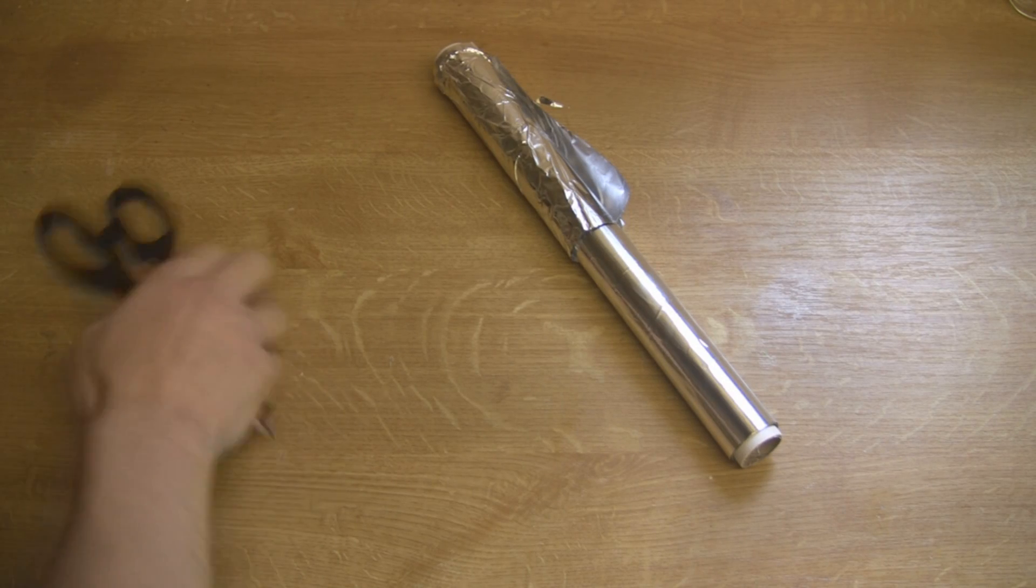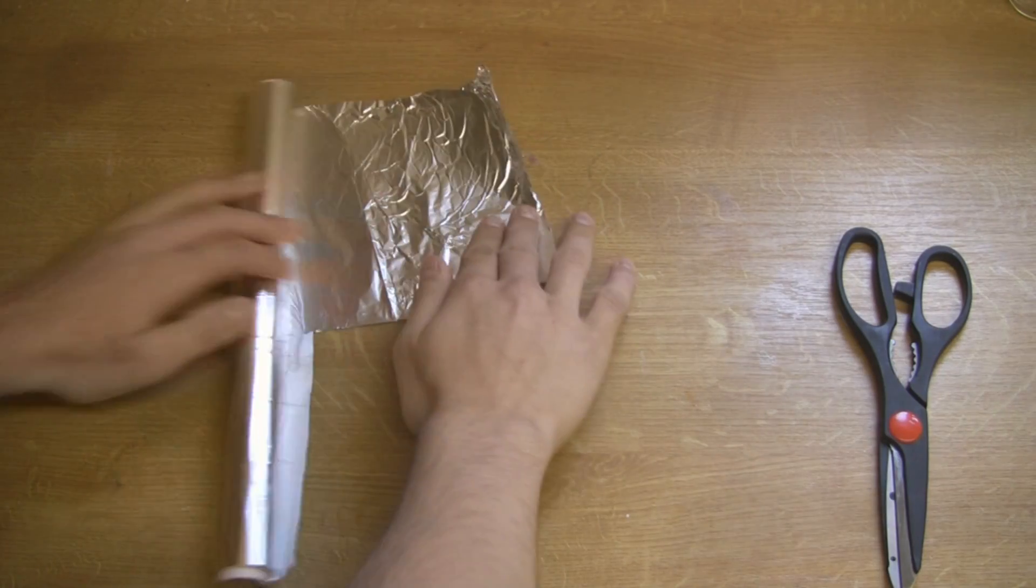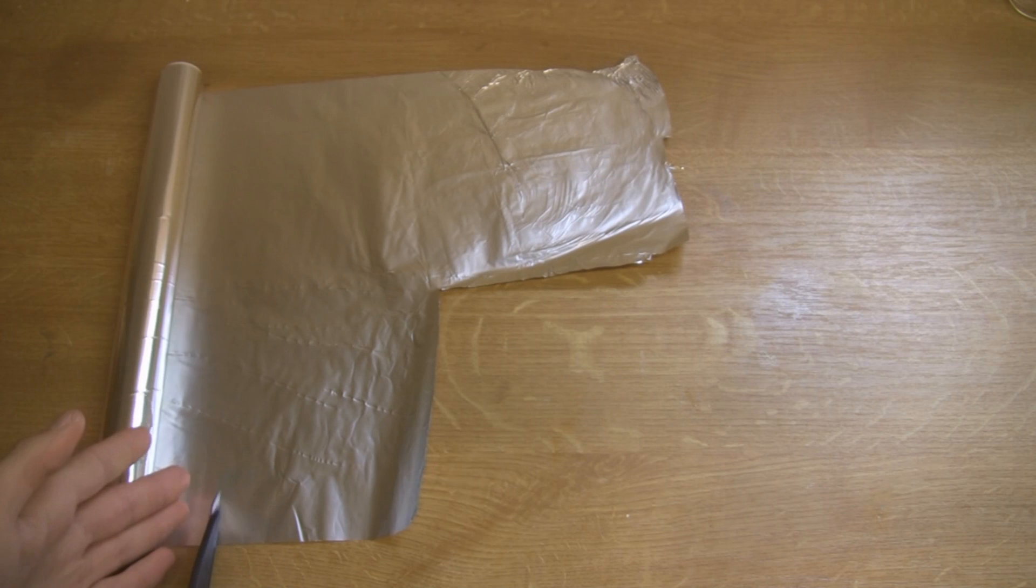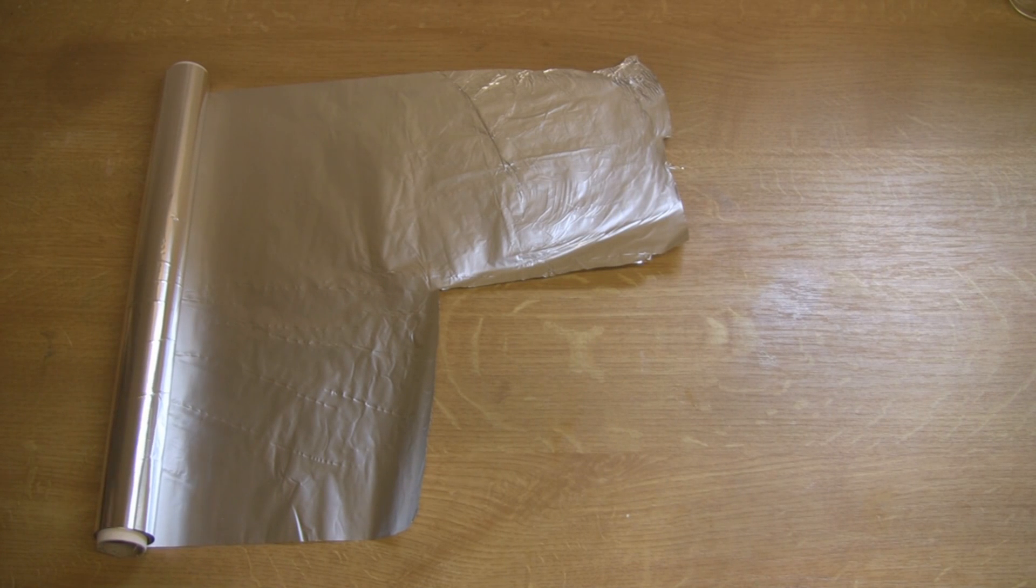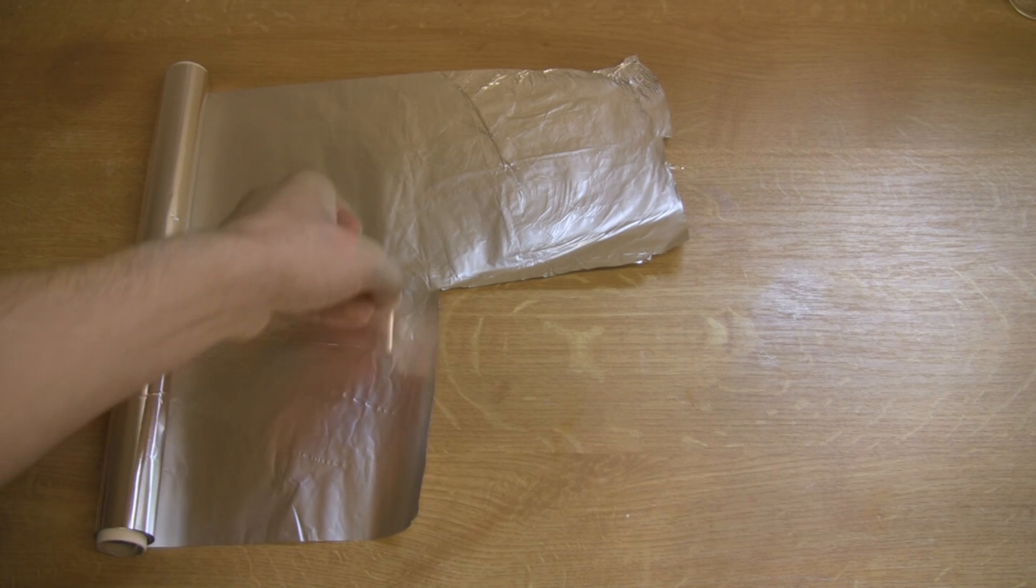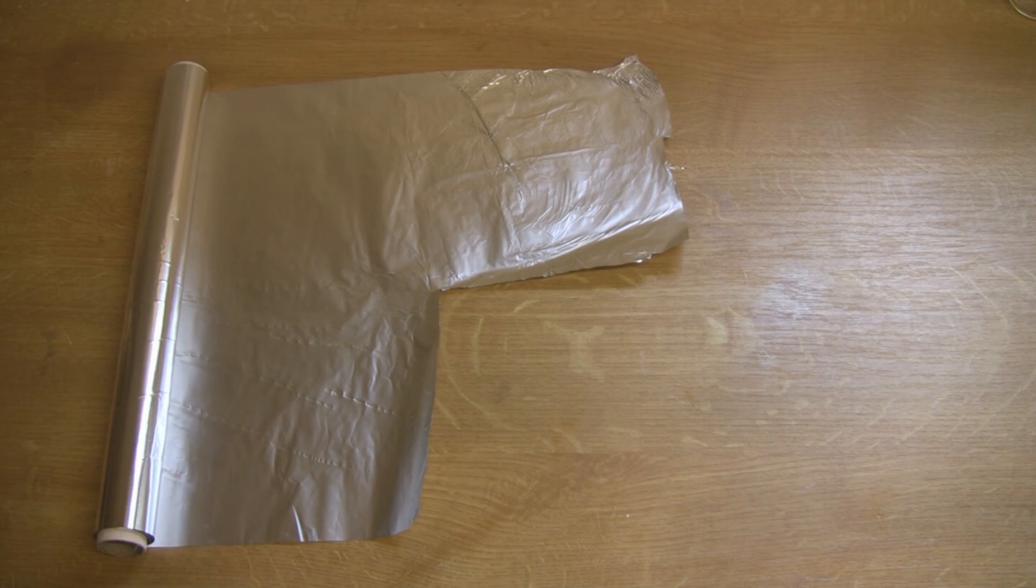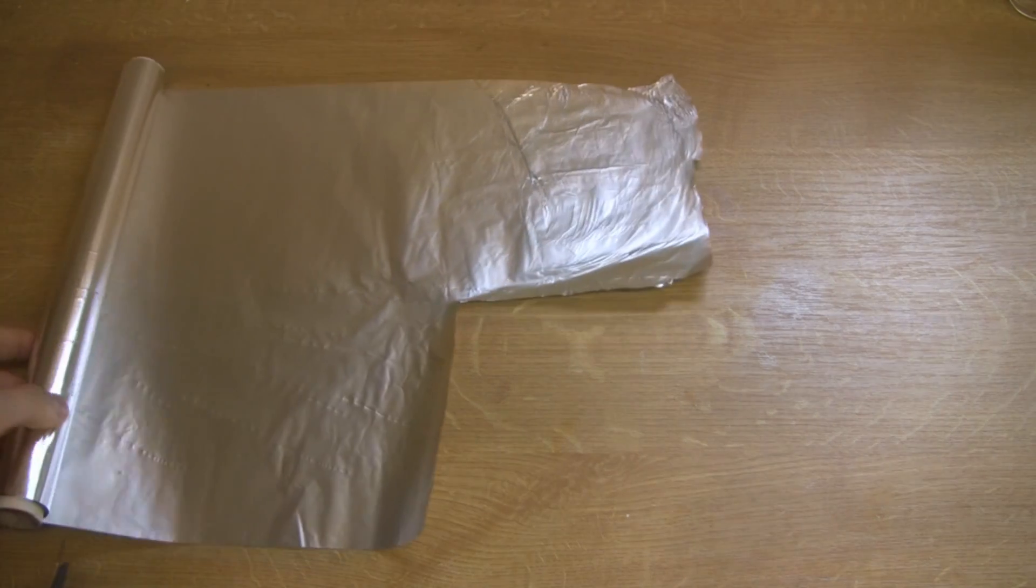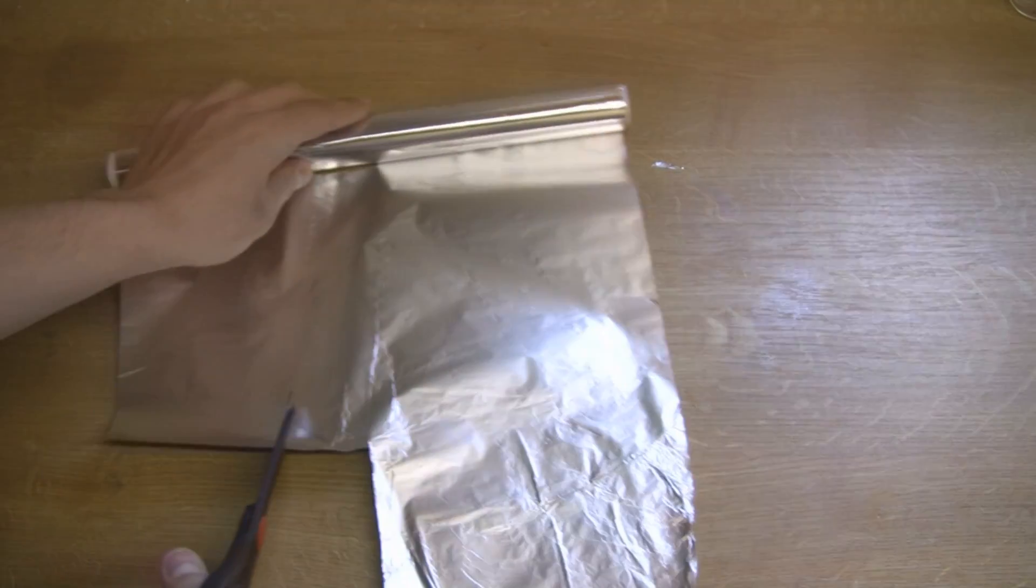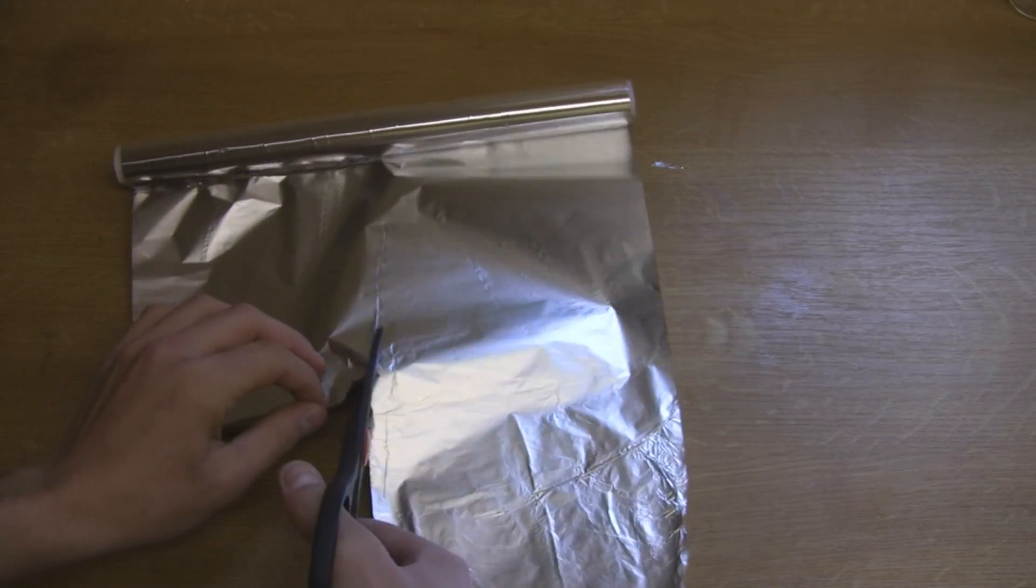To start off, take the aluminum foil and cut out roughly a square. It doesn't have to be too big, roughly three times the length of your match and about four times the length. If we just cut that out, it doesn't have to be exact, it's just rough. It's going to be trimmed down later anyway, so it doesn't matter too much.